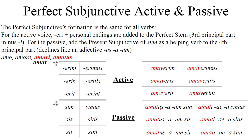Remember that amatus/um — amatus is the masculine singular, amata would be the feminine singular, and amatum would be the neuter singular. You must change this in the plural: amati for the masculine plural, amatae for the feminine plural, and amata for the neuter plural.